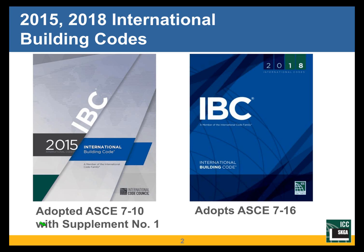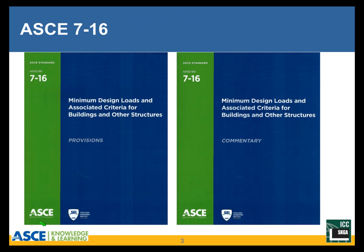That means we have big changes in the structural design provisions only when the ASCE 7 edition that is adopted changes. That happened between the 2015 and 2018 IBC. The 2015 IBC adopted ASCE 7-10 with Supplement Number 1. The 2018 IBC adopted ASCE 7-16. Between ASCE 7-10 and ASCE 7-16 there was a very large number of very significant changes, so 2018 IBC was an edition of big structural changes.